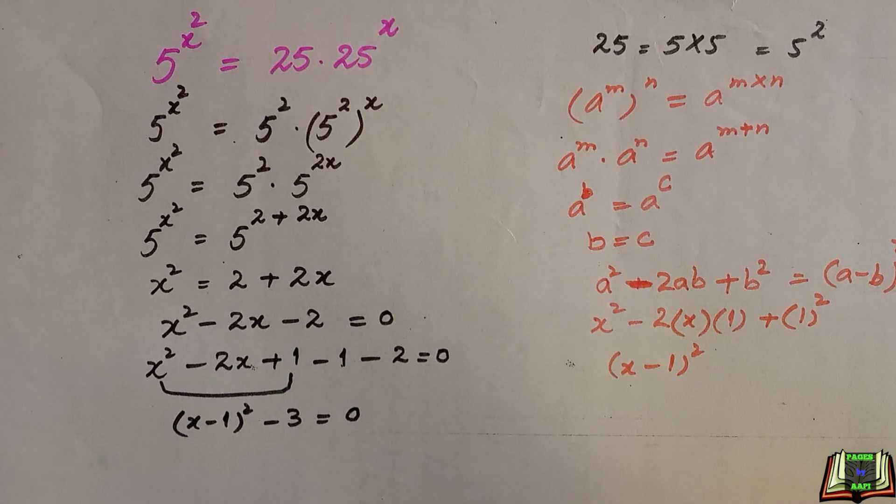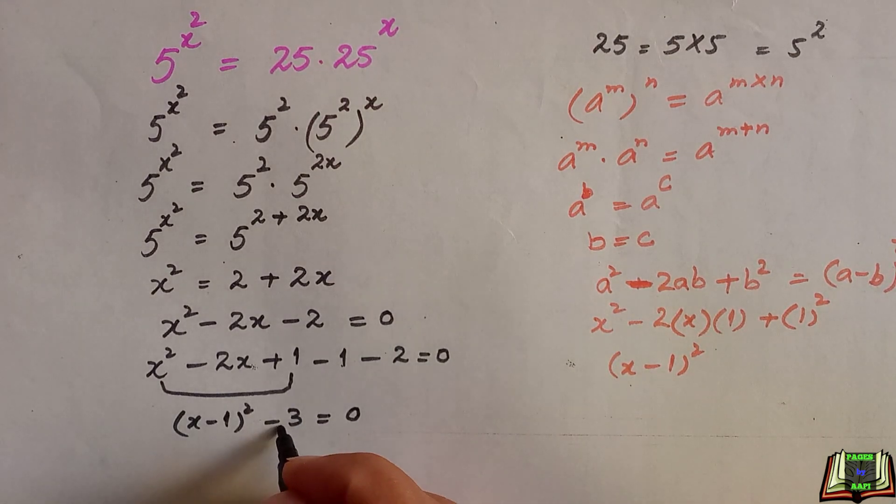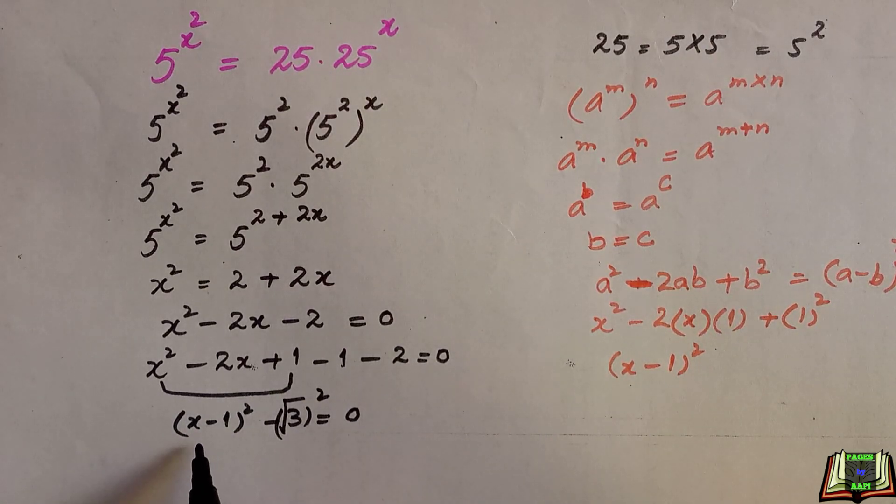We can say that 3 is the same as root of 3 whole square. This 3 is equal to root 3 whole square. Now it becomes another algebra identity a square minus b square, where a is x minus 1 and b is root 3.